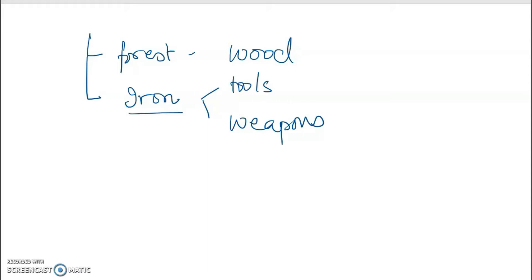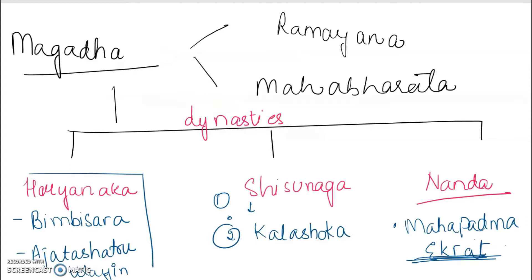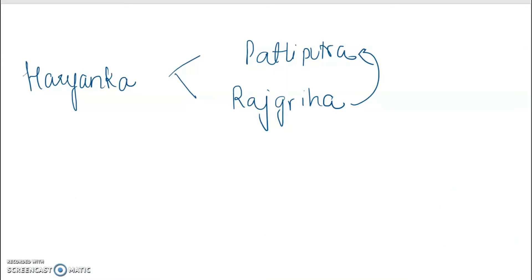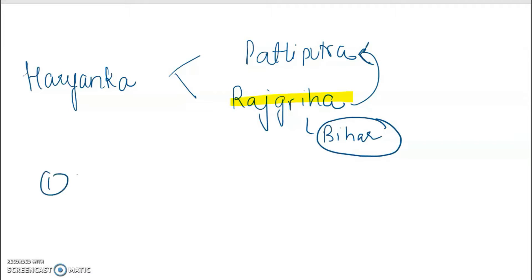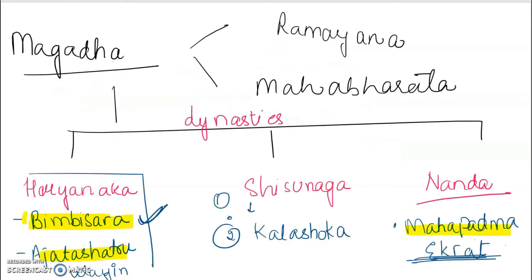In your book, two important kings are named in this empire. The first one is Bimbisara and the second is Ajatashatru, which means they were quite popular. Then there was Mahapadmananda from the Nandas. I've already talked of their capital, Rajgriha, which is in present-day Bihar. This was initially the capital. Then they moved to Patliputra. First capital till the time of Udayin was Rajgriha, and then they moved to Patliputra during Udayin's rule.